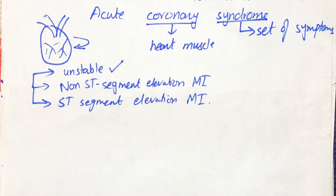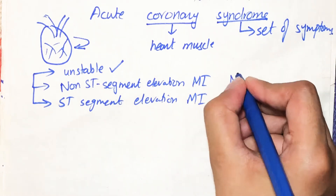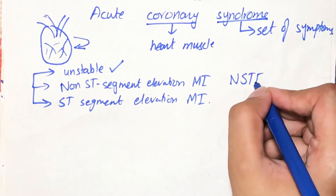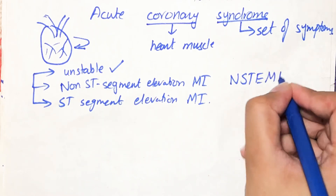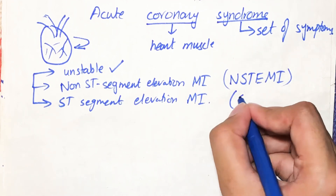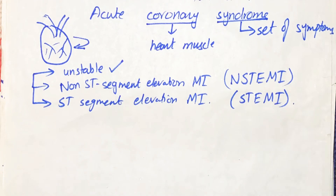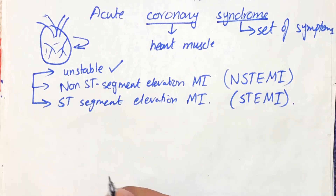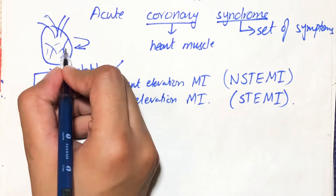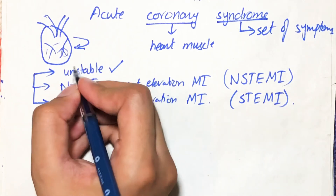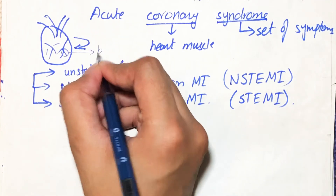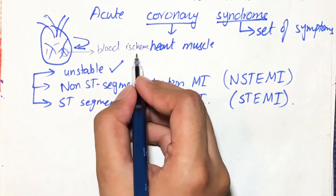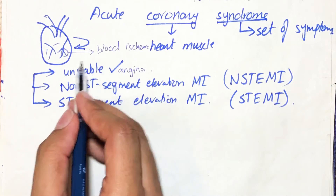We have already discussed unstable angina. In non-ST segment elevation, also called NSTEMI, acute coronary syndrome is an emergency condition commonly caused by the rupture of an atherosclerotic plaque or partial or complete thrombosis of the coronary artery. In this syndrome there is blockage of the artery supplying blood to the heart muscles, and when there is a deficiency of blood supply there is an ischemic condition, which causes unstable angina.